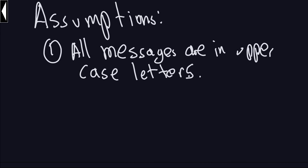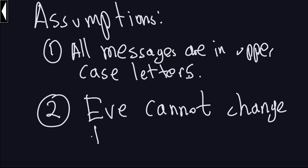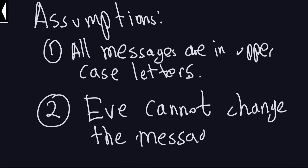The ciphertext will also be uppercase letters in the English alphabet. Assumption number two is that Eve cannot change the message — she or he can only listen but not change the message. So these are a couple of important things we're going to assume before we actually go into the examples.